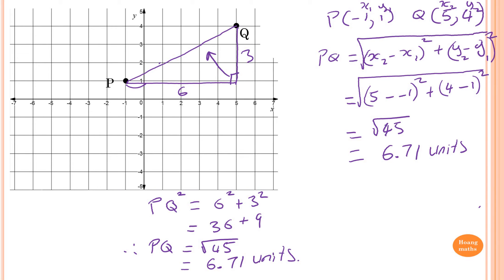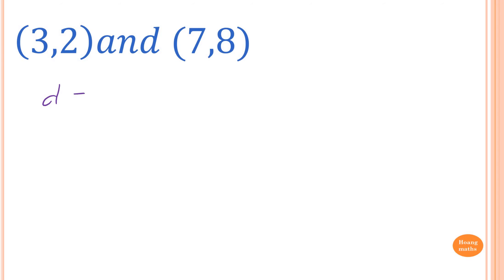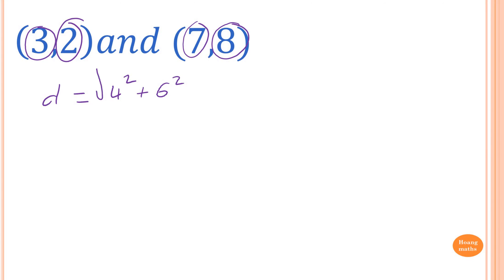The first method uses the formula; the second uses Pythagorean theorem directly — both give the same answer. Now for another example: points (3, 2) and (7, 8). Using Pythagorean theorem: from x = 3 to x = 7 is 4 units, and from y = 2 to y = 8 is 6 units. So d² = 4² + 6² and d = √(4² + 6²).